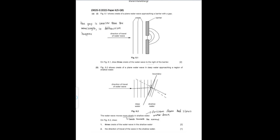For the next question, Part A, Part I states: Figure 6.1 shows crests of a plain water wave approaching a barrier with a gap. Draw three crests of the water wave to the right of the barrier. This is known as diffraction. Since the gap is smaller than the wavelength, diffraction occurs and the wave curves. One correction: technically, none of the wave crests should be touching the barrier, because the light is moving away from the gap, so no wave should come at a perfect 90 degrees to the barrier.